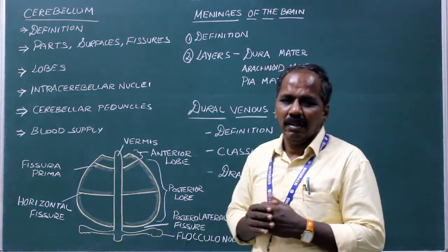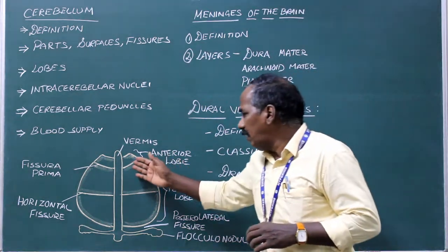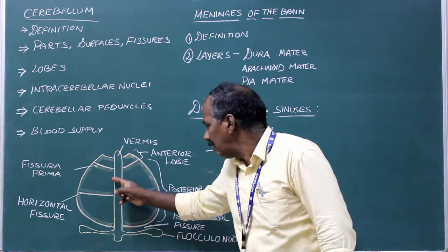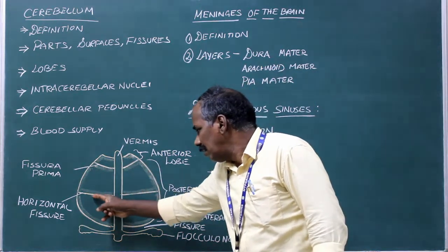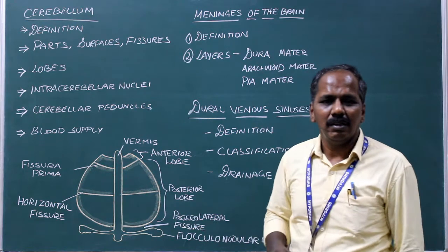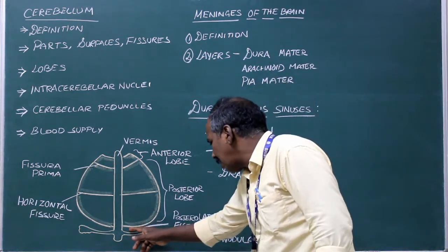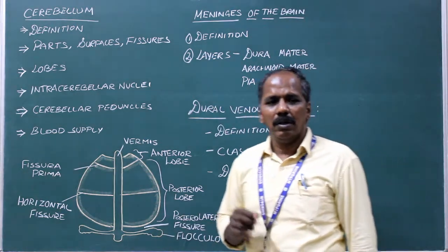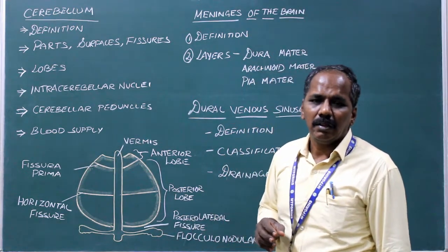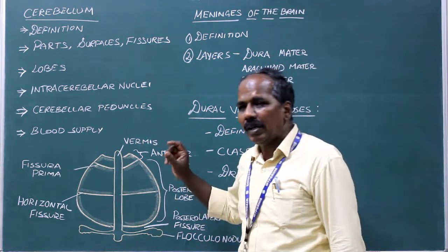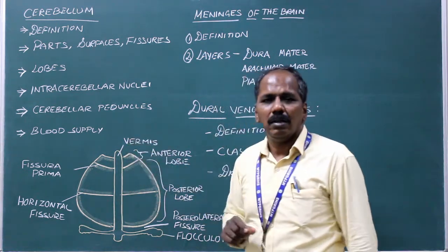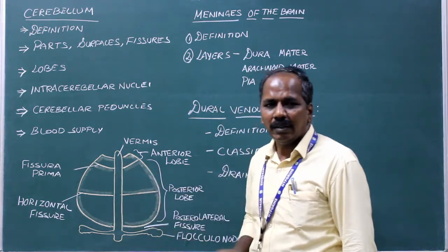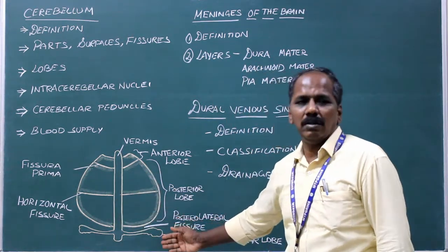Fissures. There are three fissures in the cerebellum: number one, fissura prima; number two, horizontal fissure; number three, posterior lateral fissure. Lobes. It consists of three lobes: number one, anterior lobe; number two, middle or posterior lobe; number three, flocculonodular lobe.